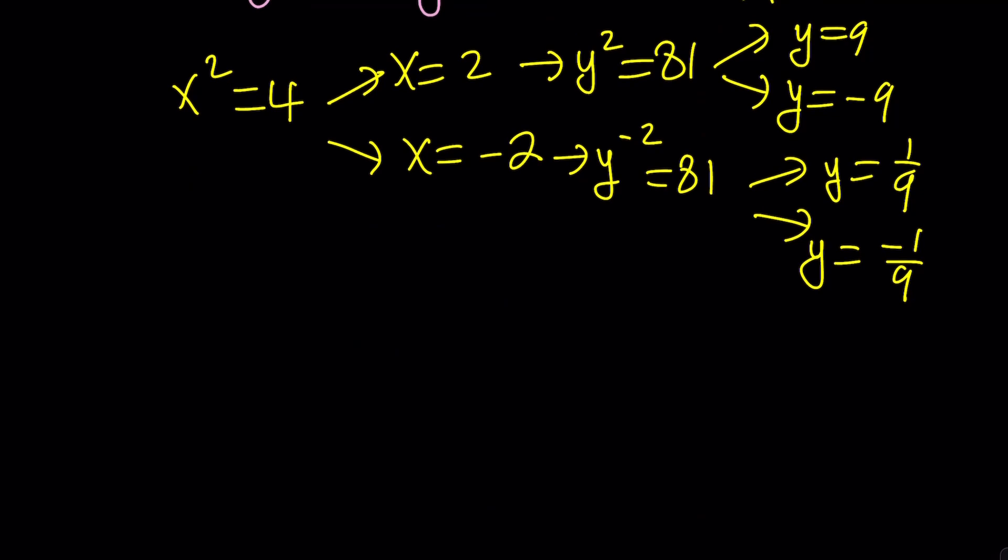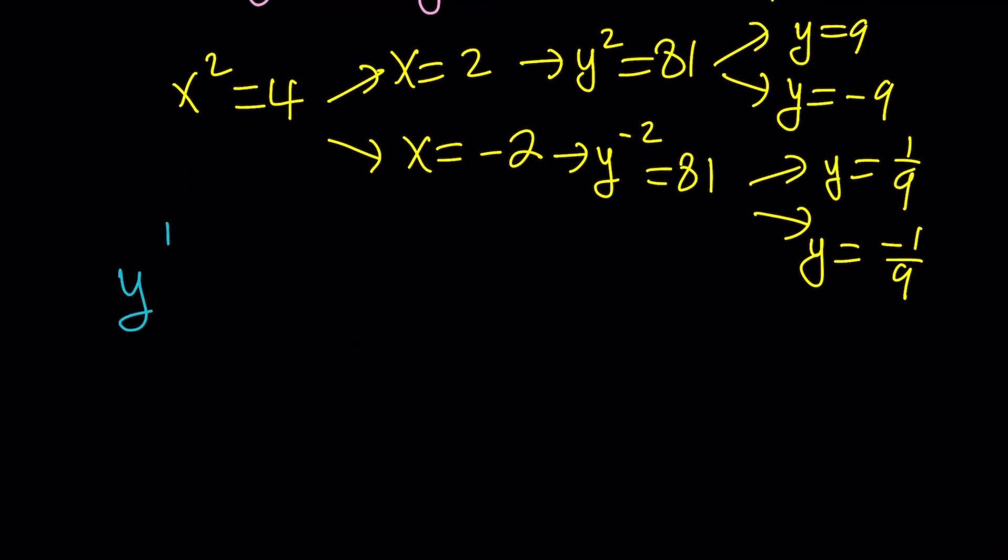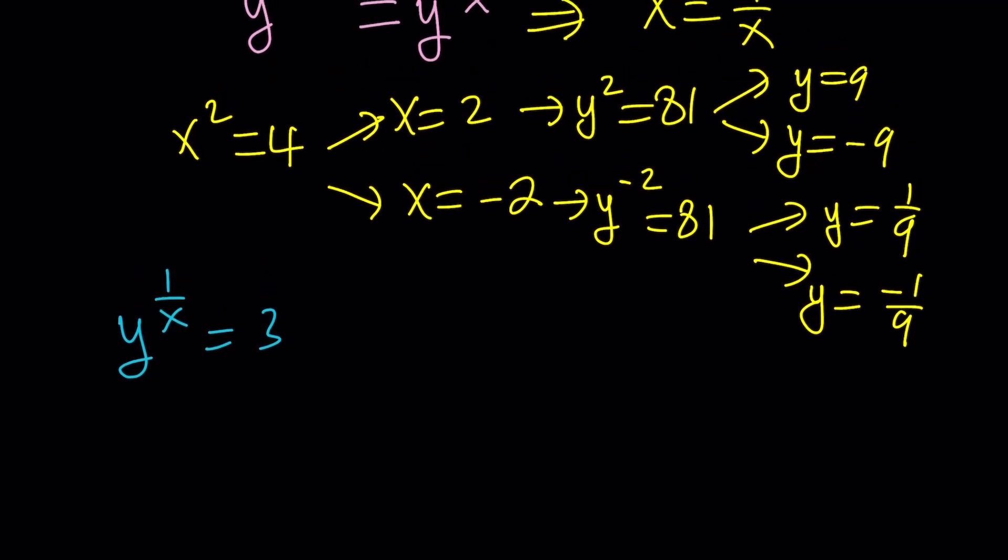If you write y to the negative 2 as 1 over y squared and then switch around, you're going to get y is either 1 over 9 or negative 1 over 9. So it looks like we have four ordered pairs that satisfy the equation. The problem is we didn't check everything with the first equation. We have y to the power 1 over x equals 3. By the way, we're looking at real solutions. The complex world would be a little different. Well, if y to the power 1 over x is equal to 3, obviously x cannot be 0. We can raise both sides to the power x, and that gives us y equals 3 to the power x. And as you know, 3 to the x, if x is a real number, cannot be negative. This is always going to be positive.